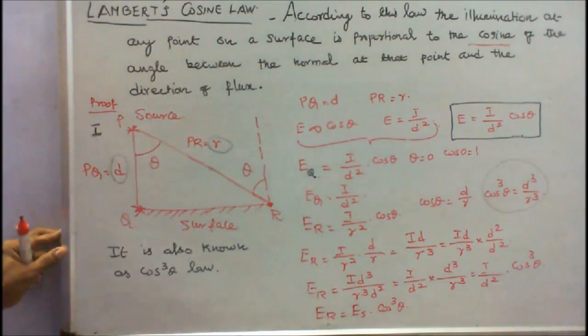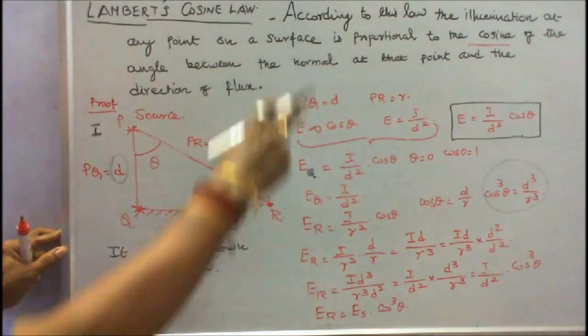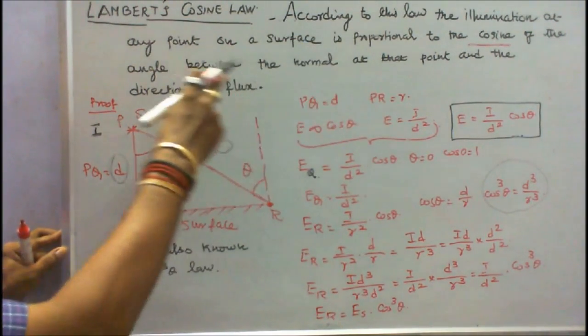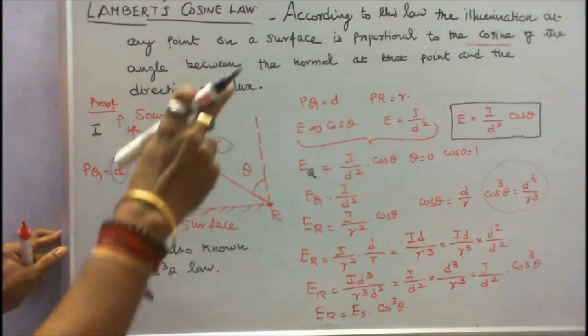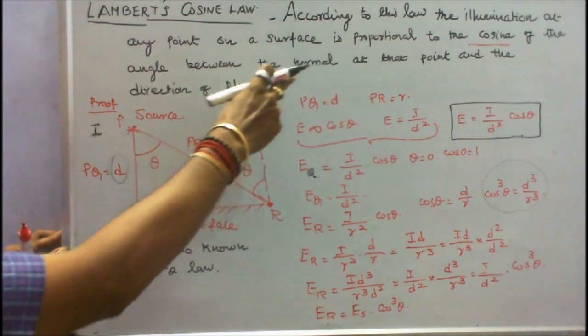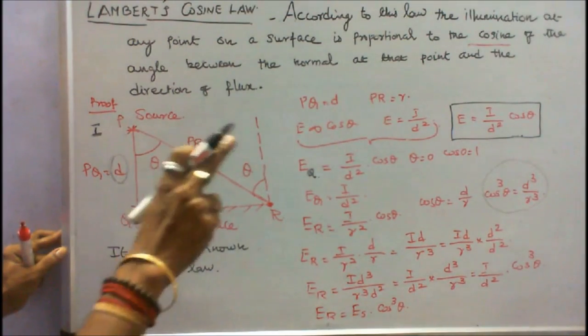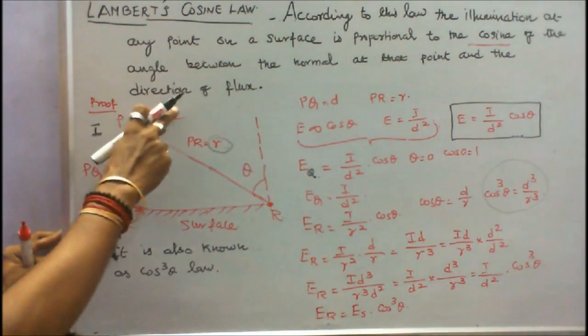Lambert's cosine law. According to this law, the illumination at any point on the surface is proportional to the cosine of the angle between the normal at that point and the direction of flux.